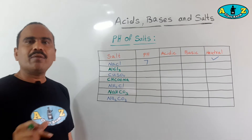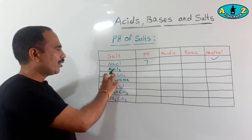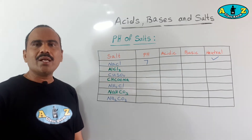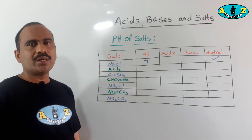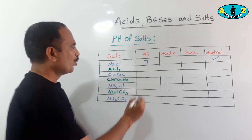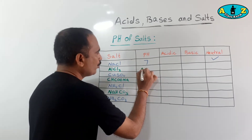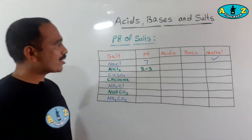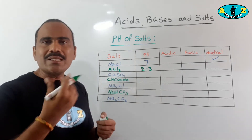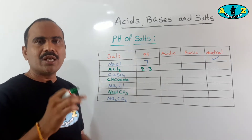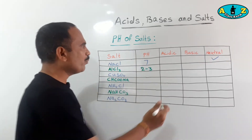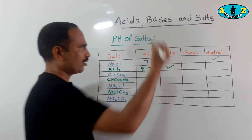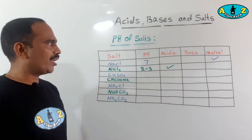The second salt is aluminum chloride. Its formula is AlCl₃. Its pH value is 2 to 3, which means it is less than 7. Less than 7 means it is acidic in nature — an acidic salt.